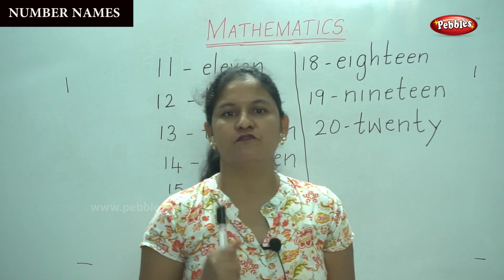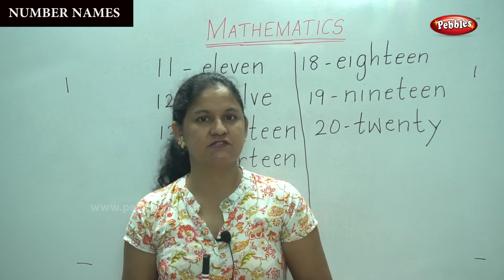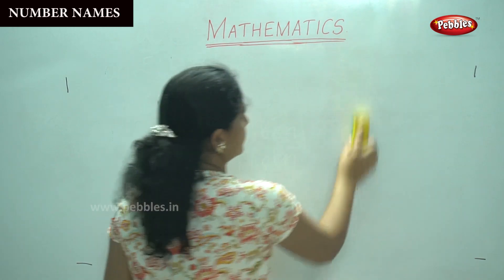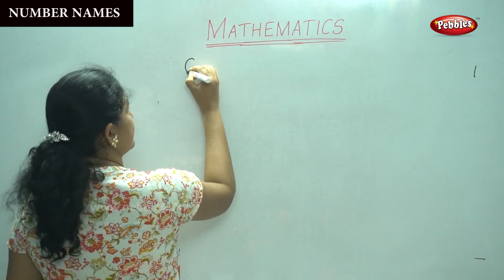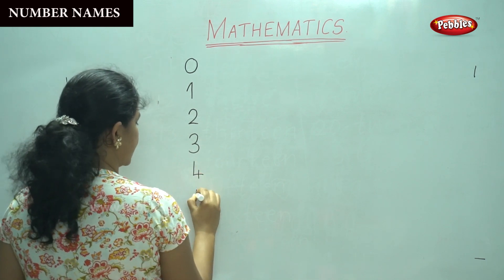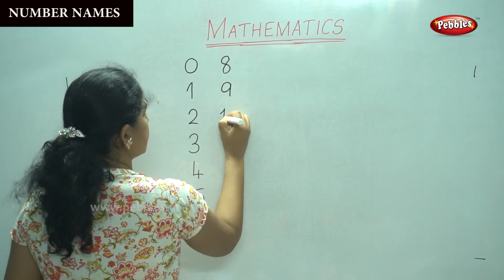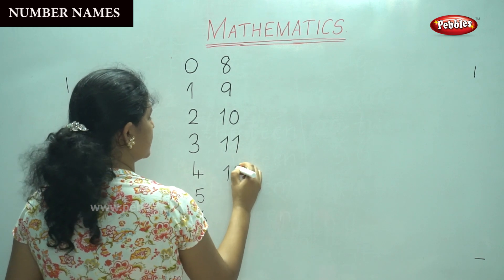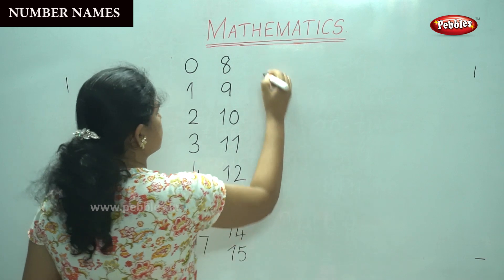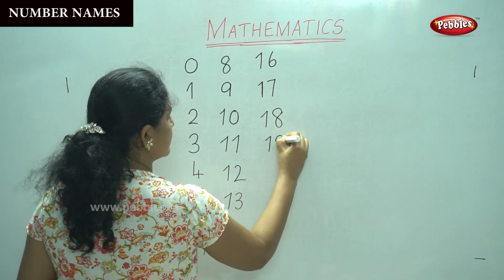So we have learnt the number names for numbers 0 to 20. We have already learnt to identify the numbers as well as write the numbers. So now we are going to start from 0 and write numbers till 20: 0, 1, 2, 3, 4, 5, 6, 7, 8, 9, 10, 11, 12, 13, 14.